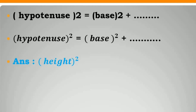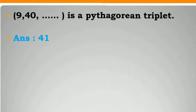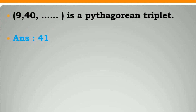Hypotenuse square is equal to base square plus height square. The set (3, 4, 5) is a Pythagorean triplet. The set (9, 40, 41) is a Pythagorean triplet.